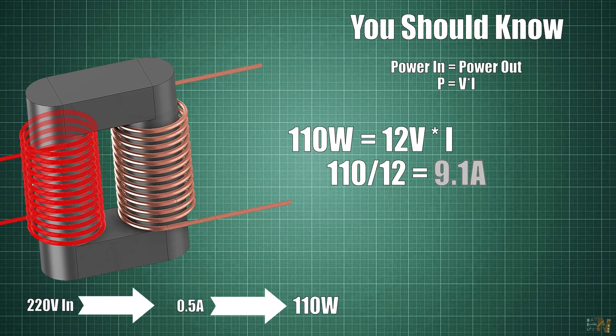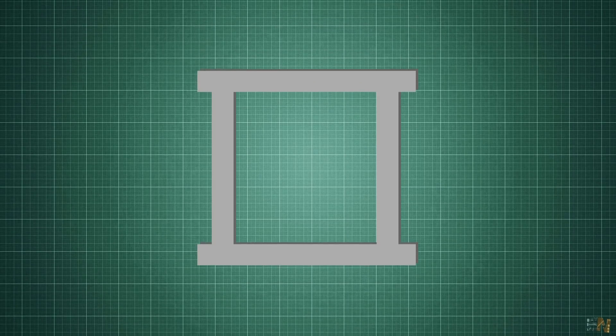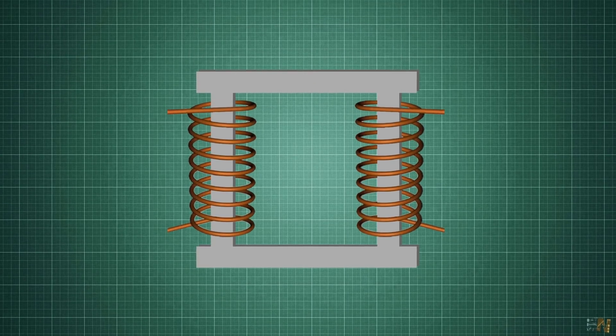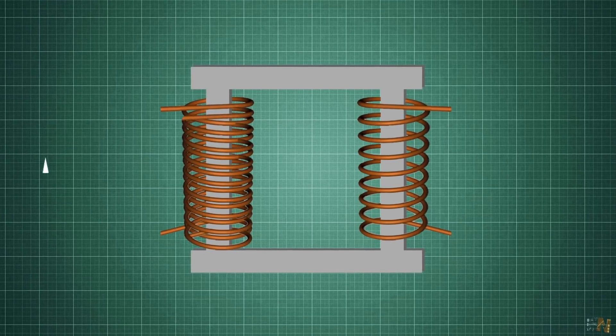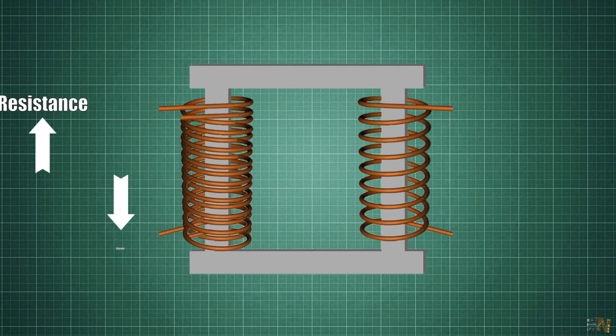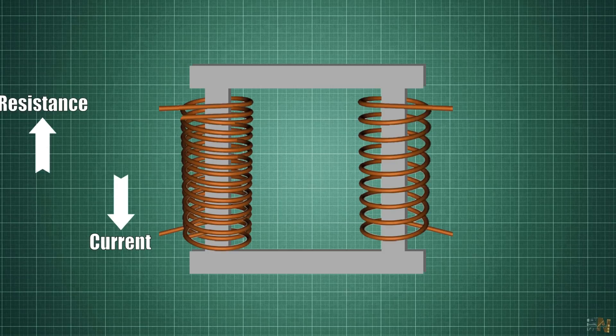So we can get higher current at the output. But you must take in consideration the used wire. For that you should know, more windings will give you higher resistance, so lower current. So you need thicker wire if you want the same current because thicker wire will have a lower resistance.